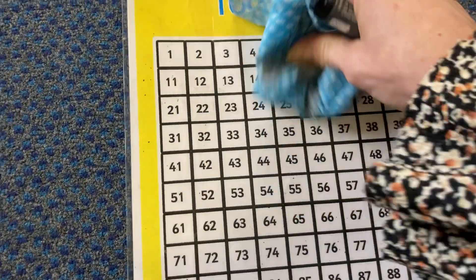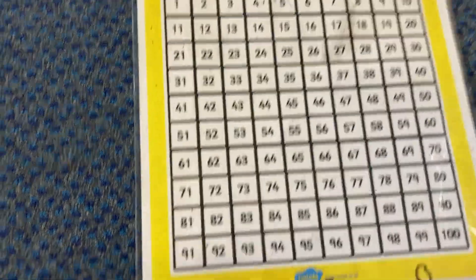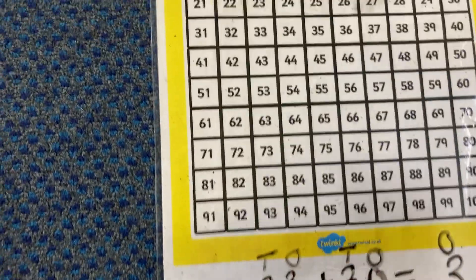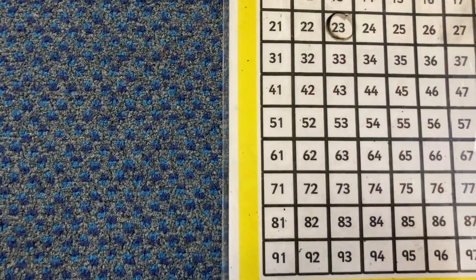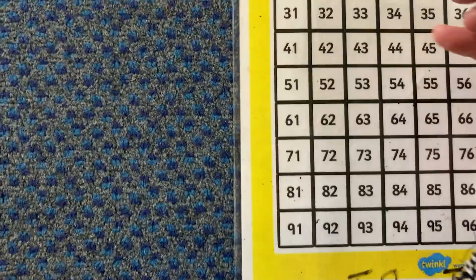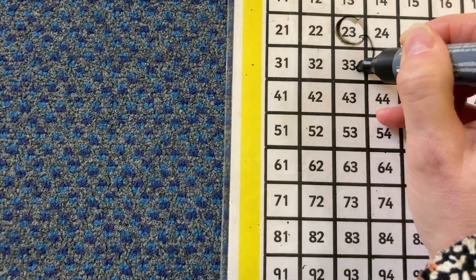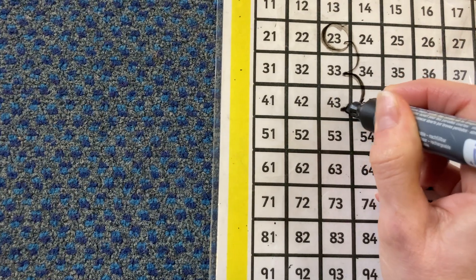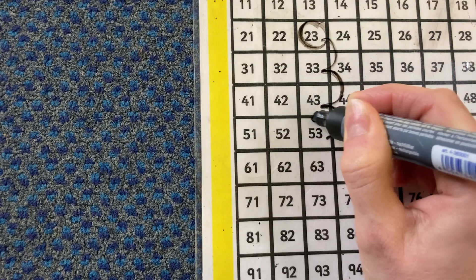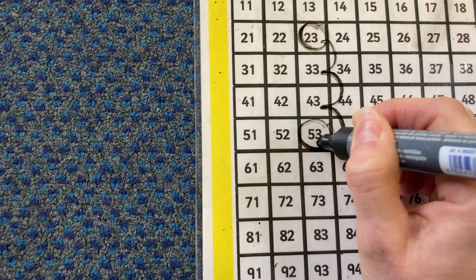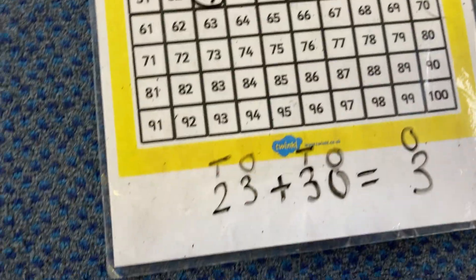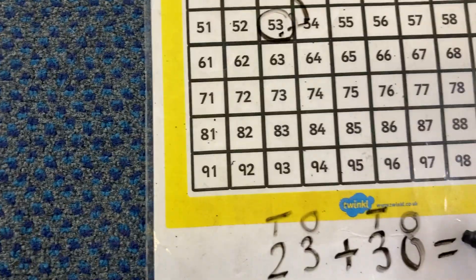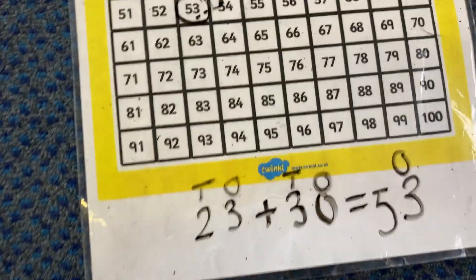So let me just rub that off there. Let's find 23, put a circle around it and add 30. So 10, 20, 30. And you can see the ones is the same, it's the tens that's changing, and my answer is 53.